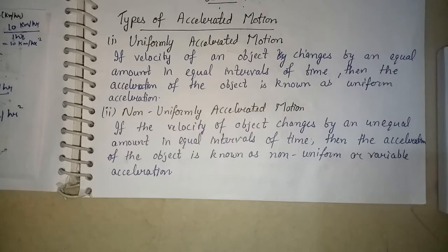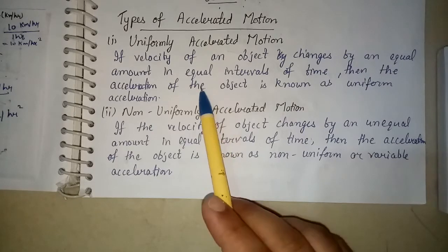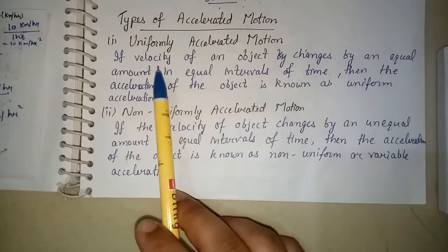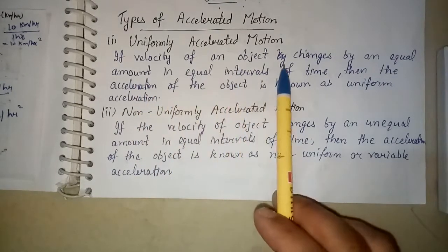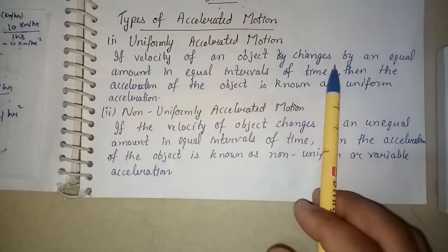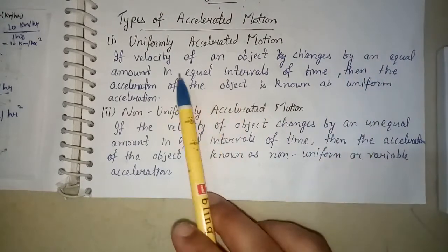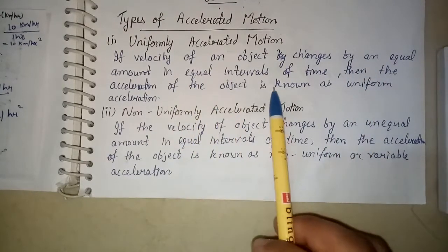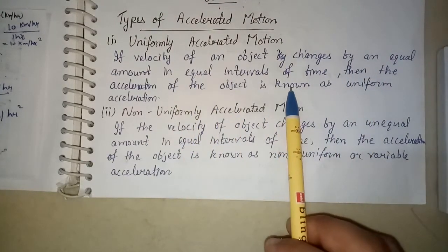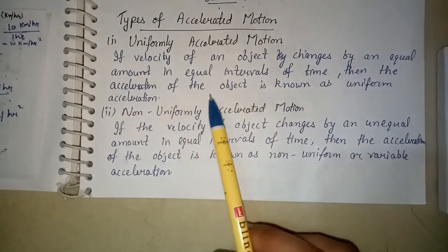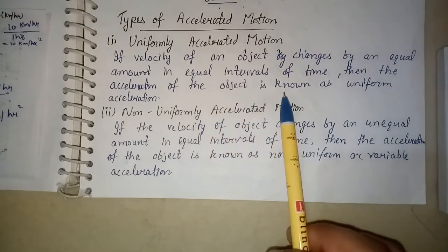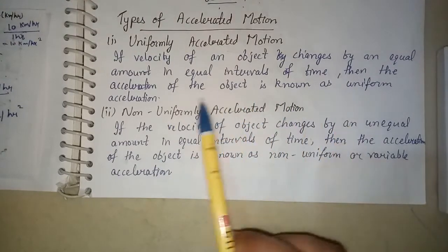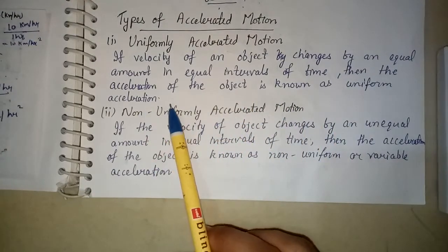Uniformly accelerated motion means: if the velocity of an object changes by an equal amount in equal intervals of time, then the acceleration of the object is known as uniform acceleration.